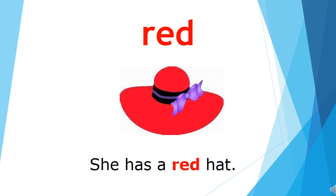The word is 'red.' Children, you all know the names of colours. We are talking about red colour, and red is a primary colour — that also you know. Now let's use this word in a sentence: 'She has a red hat.' You can also use it like 'Red is my favourite colour.'